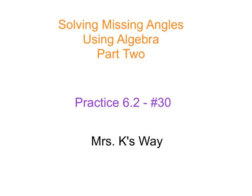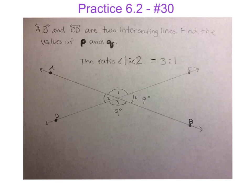We are going to be looking at our practice 6.2 example number 30. We're going to be using ratios and our knowledge of angles in order to find missing angles. So here's what the problem asks: If line AB and line CD are two intersecting lines, find the values of angle p and angle q.